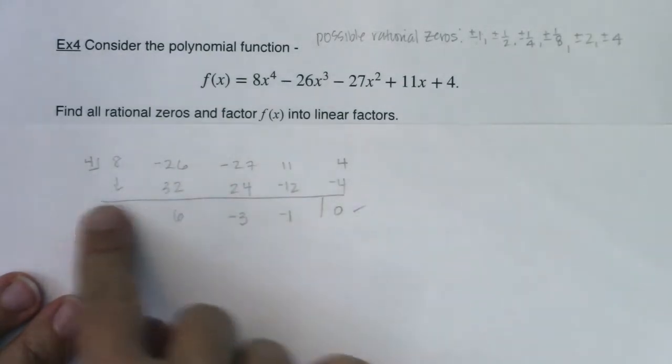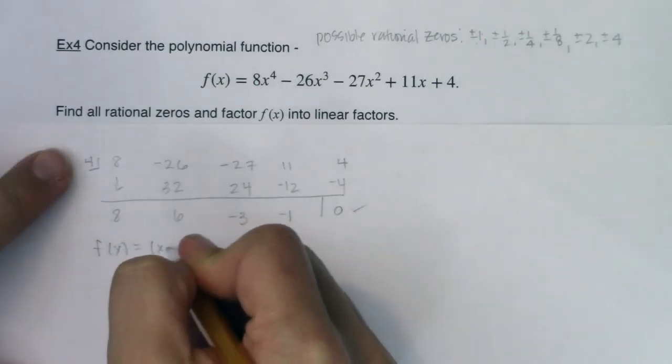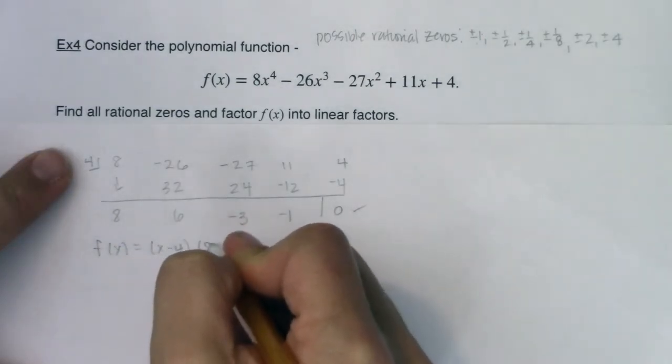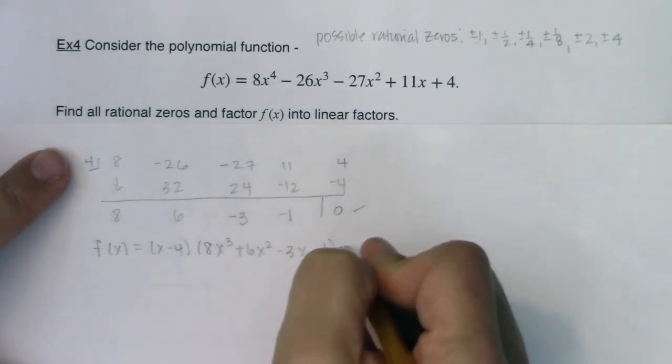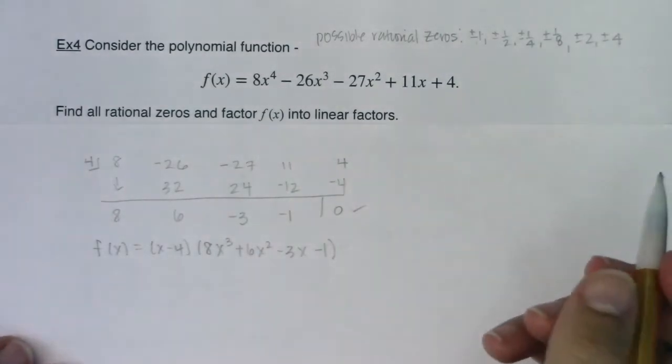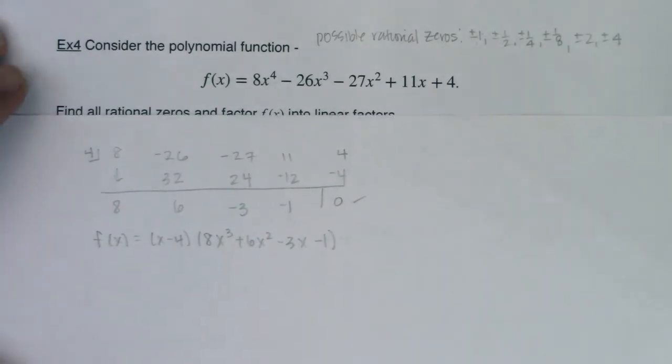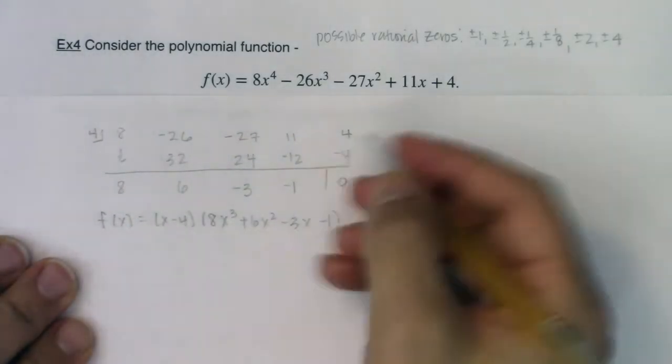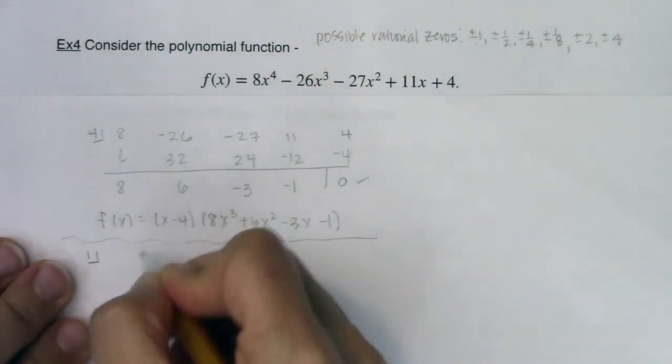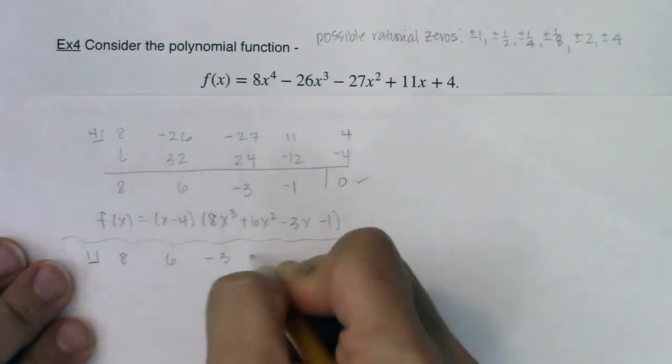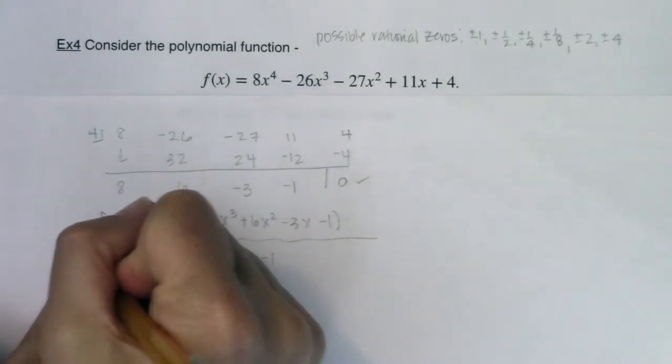It's just the coefficients are going to be different if you go with four first, which is fine. So here I know x minus four is a factor, and I also know 8x³ + 6x² - 3x - 1 is my other factor. Now let's say I tried one. So I would go one and I would have eight, six, negative three, and negative one. Oh, and I got to be a little careful. One wasn't a zero. I'm forgetting, it was negative one.